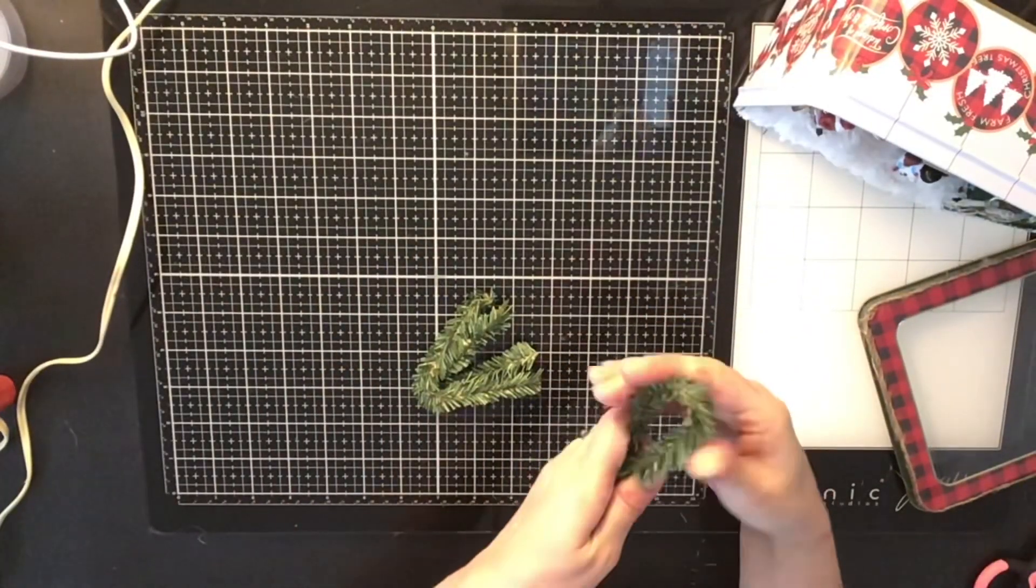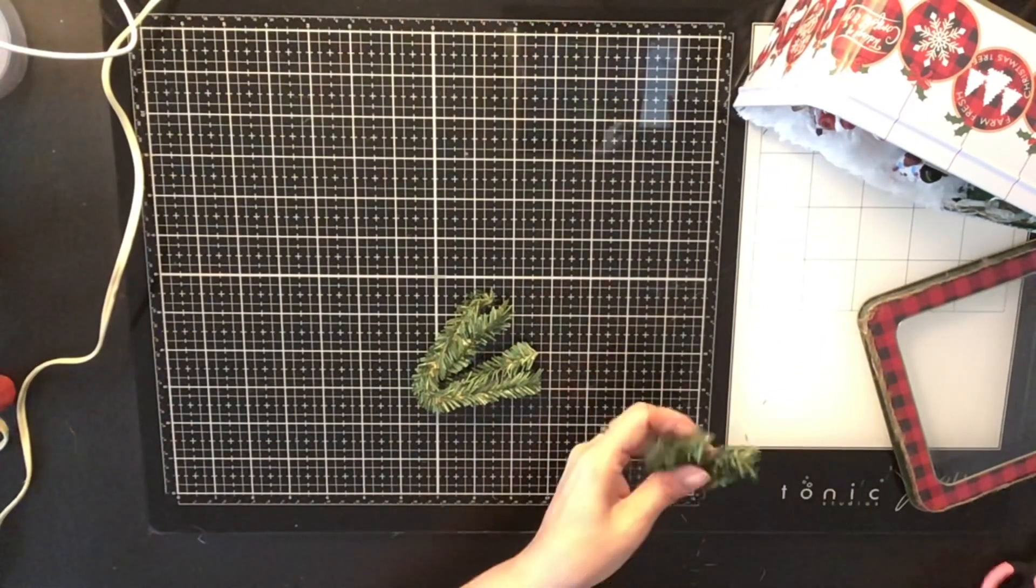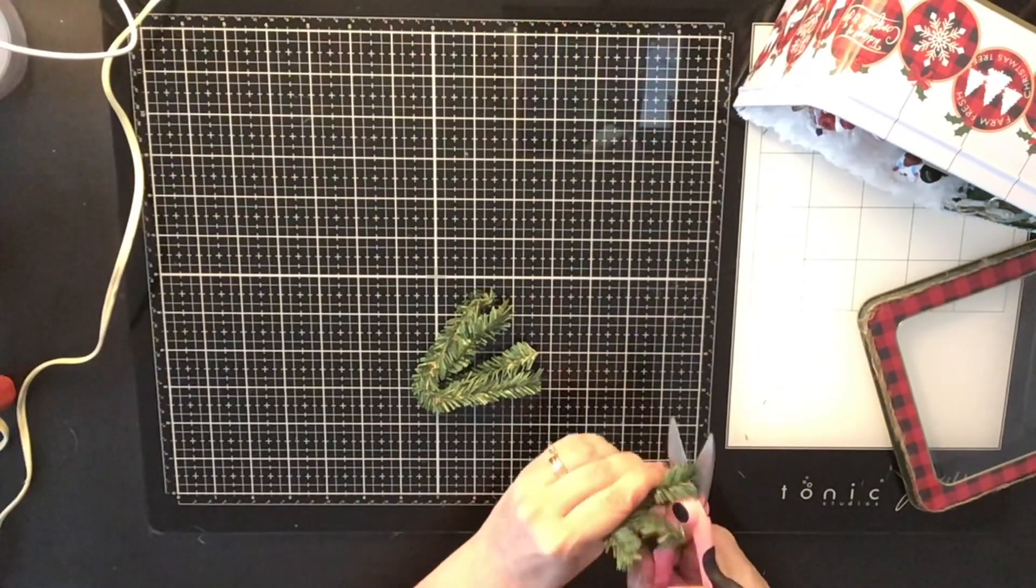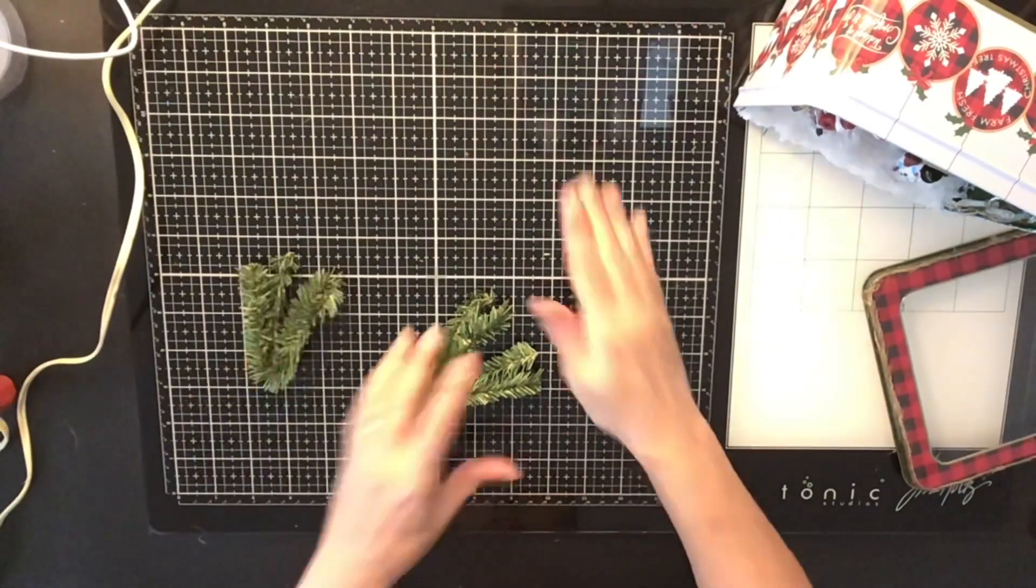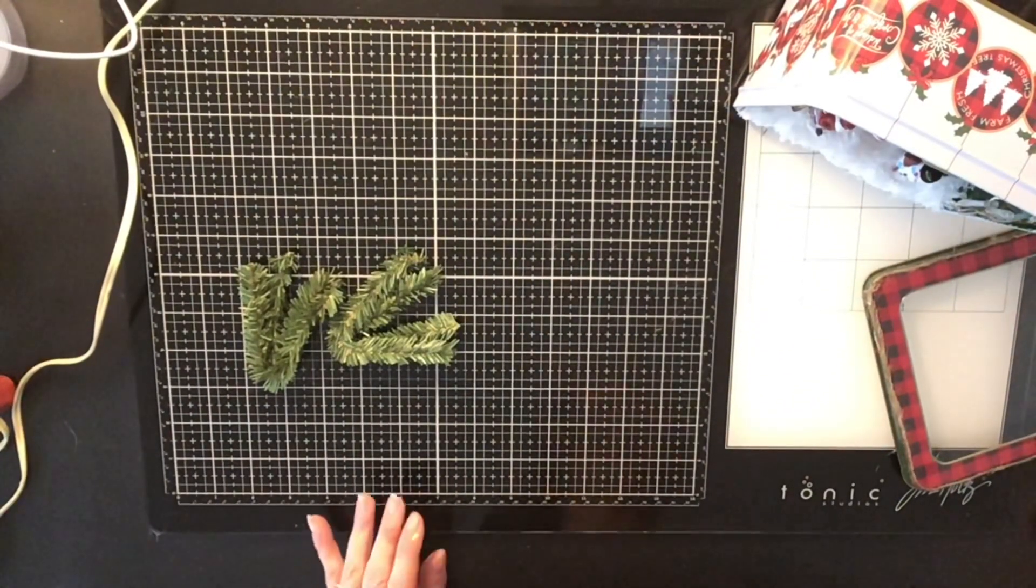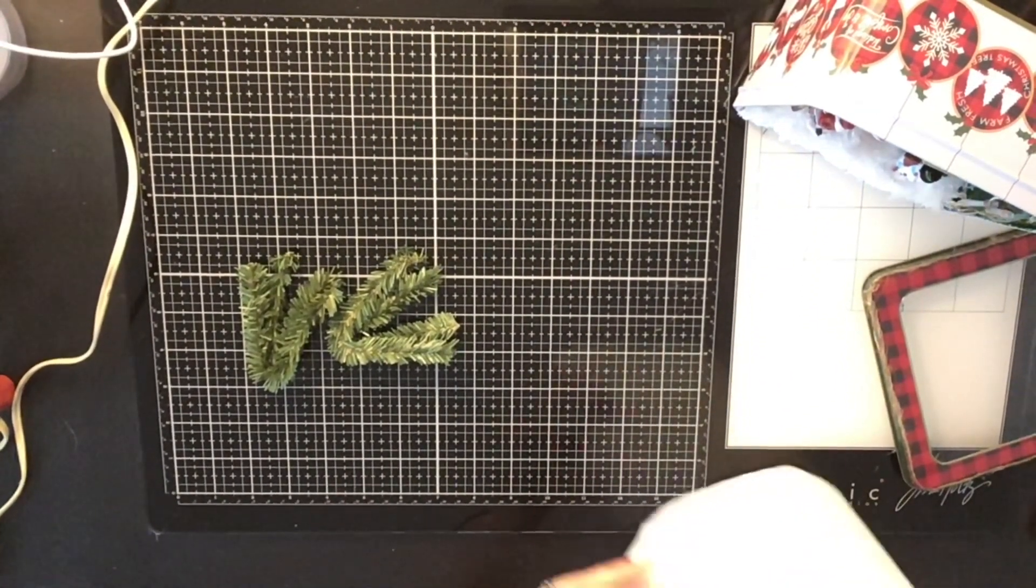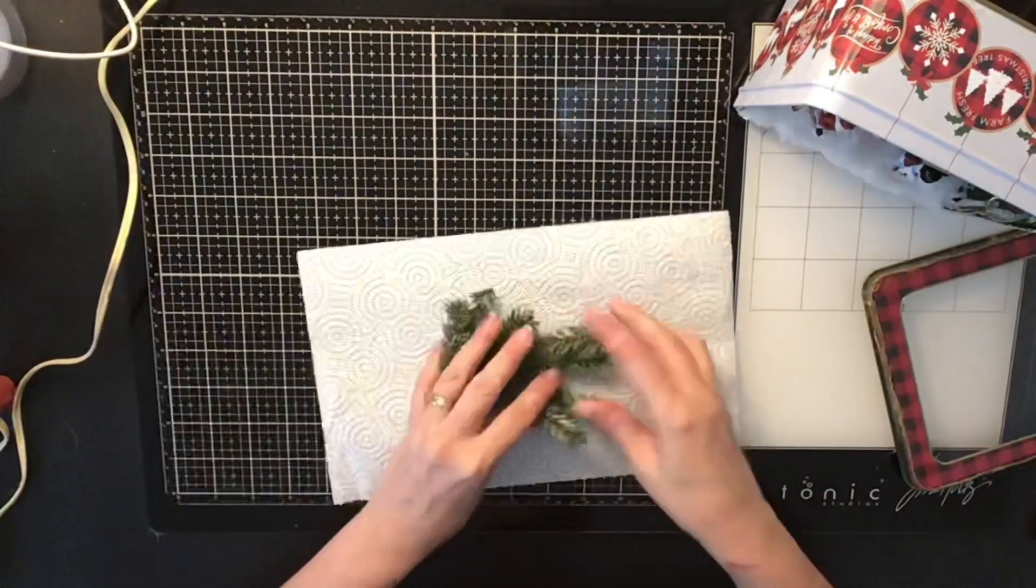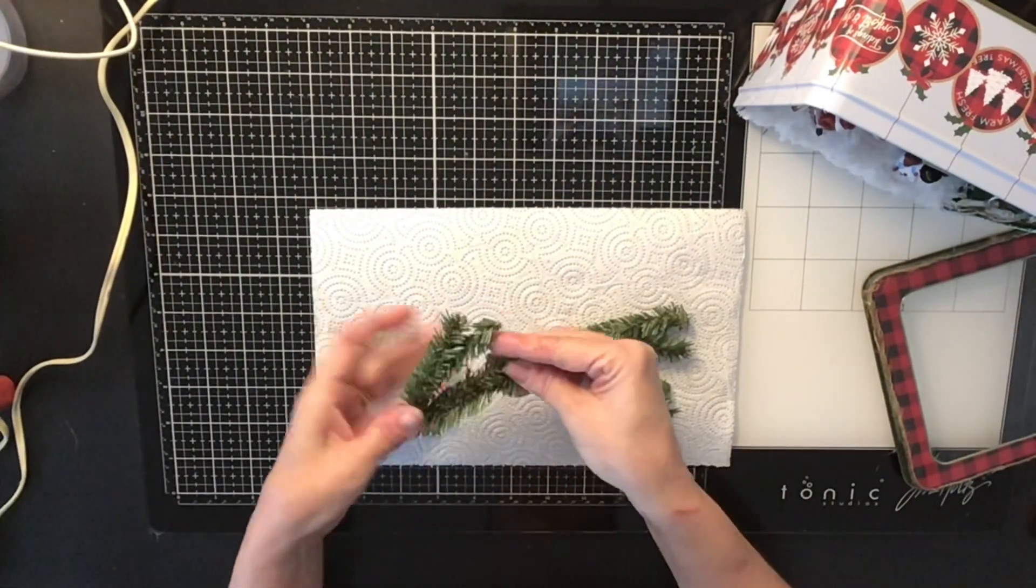So now I also got these at the Dollar Tree. These are just little spruces. They just look like little pines. And they're just long strips of them. And what I did is I bent them. They have a wire on them. You can bend them very easily. And I cut the end of them. And then I just kind of like made them like this.